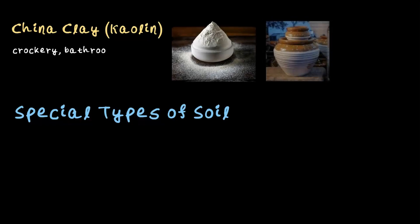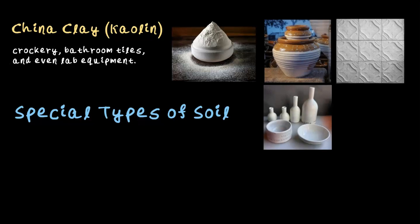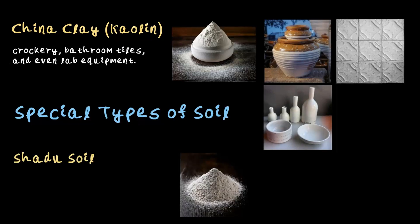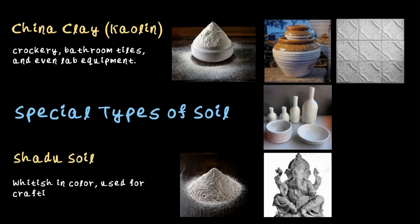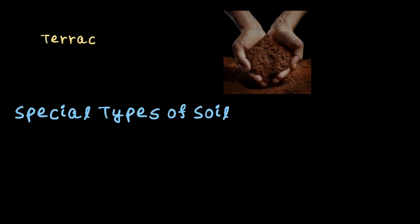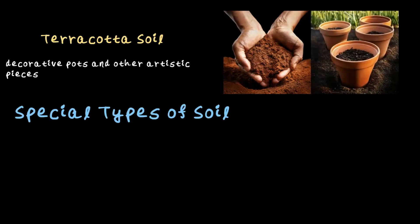Let's talk about some special types of soil, because not all soil is the same — soil is wonderfully diverse. First, we have China clay, also known as kaolin. It's white in color and used to make crockery, bathroom tiles, and even lab equipment. Next is shadow soil, which is also white in color and is specifically used for crafting statues and idols. Then we have terracotta soil, a red-colored soil very popular for making decorative pots, artistic pieces, and even water pots. I'm sure you've got something made of terracotta at home!